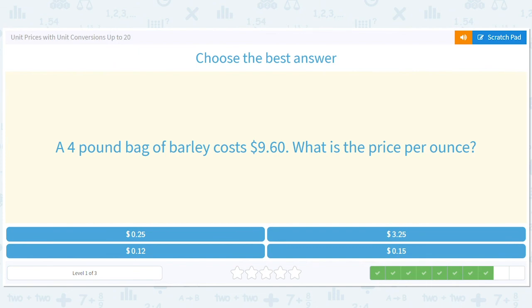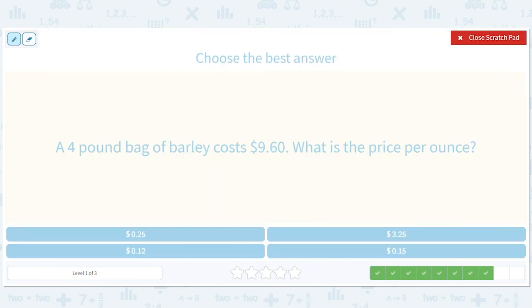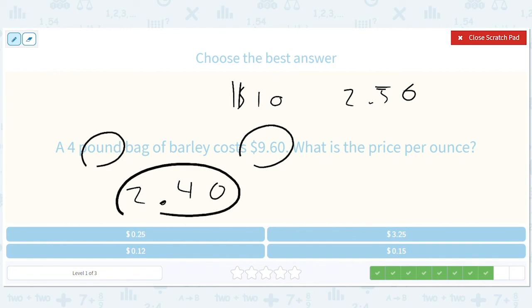A four pound bag of barley cost $9.60. What is the price per ounce? If it were 10 dollars it would be 250 per pound, but that would be 40 cents off. So we divide 40 by 4 and we get 10, so it should be 240 per pound. If it's 240 per pound we then do 240 divided by 16, and that's going to be around 15 cents. So 15 cents will be the answer there.